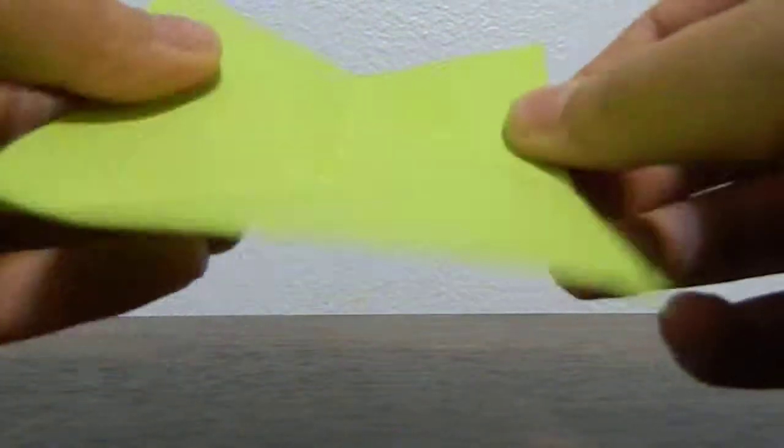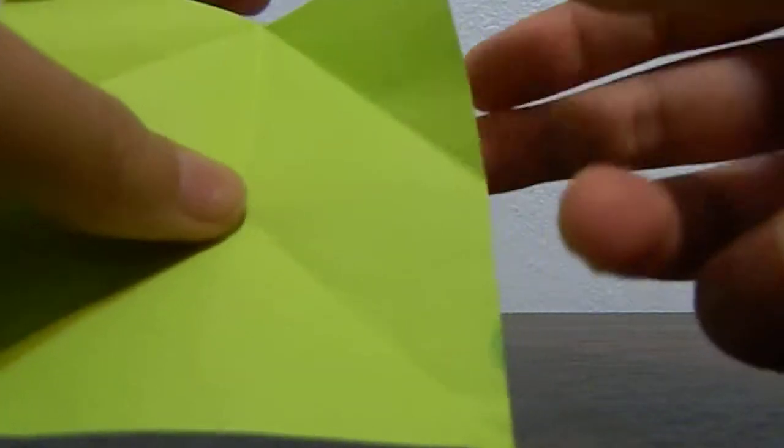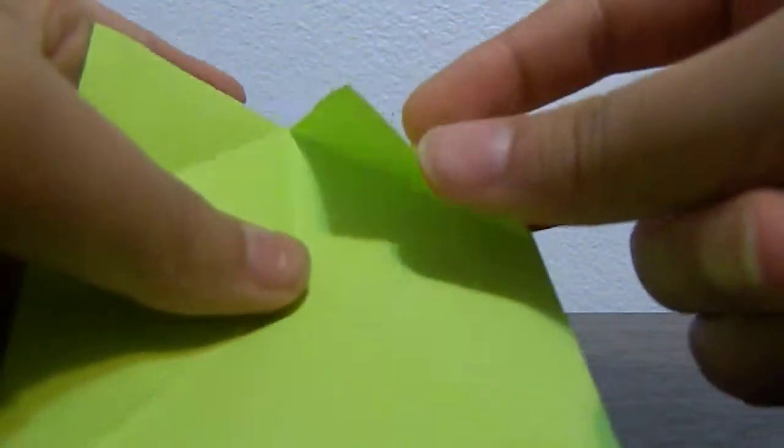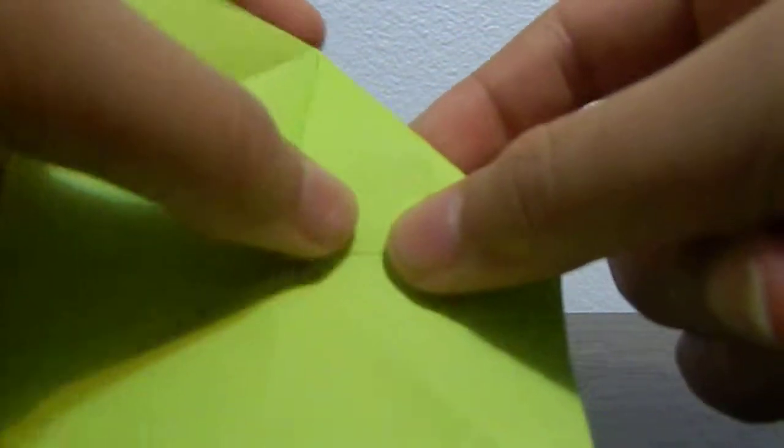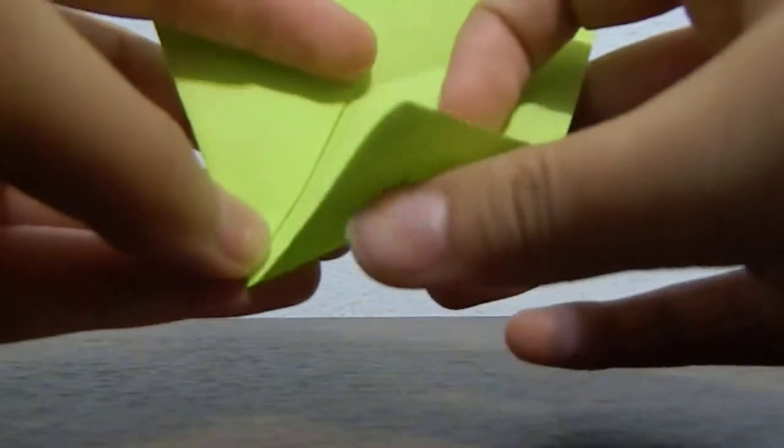If you're using a sticky note, use the sticky side for this. You need to fold this down into the center line so it's like that and crease it. Do the same for the other side.